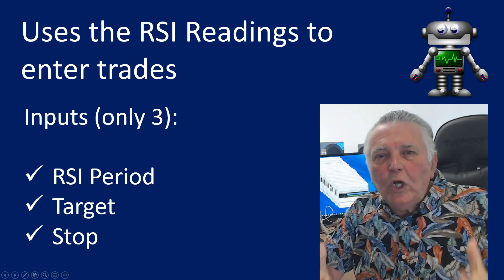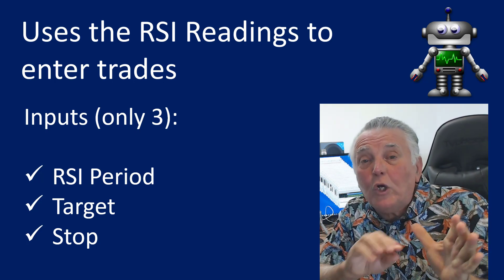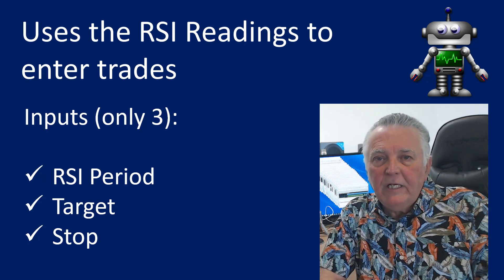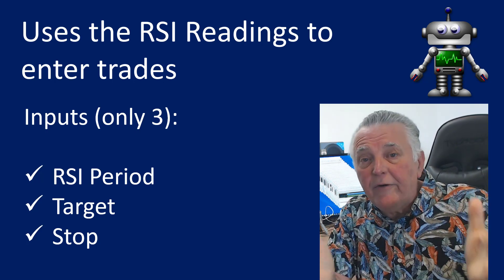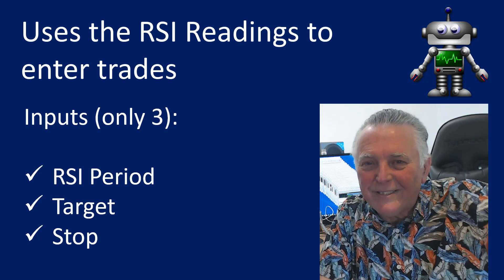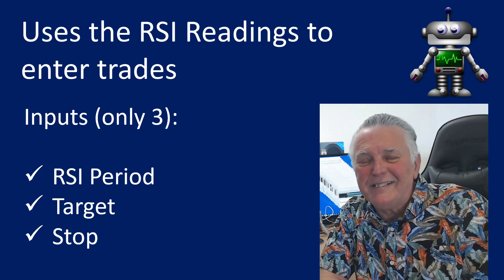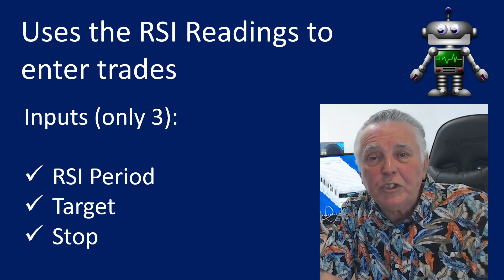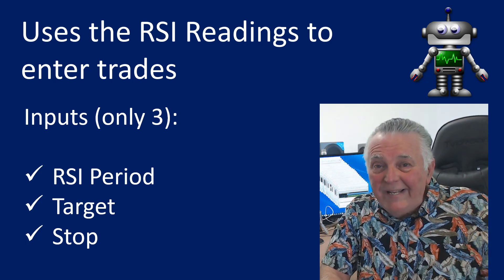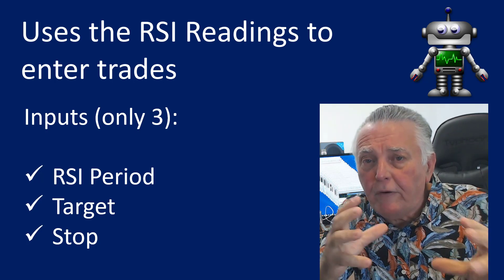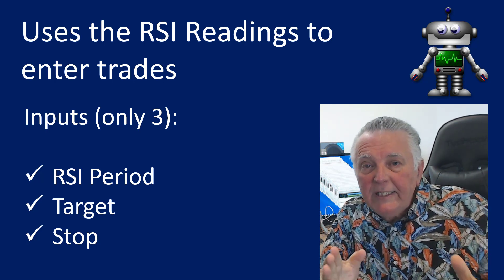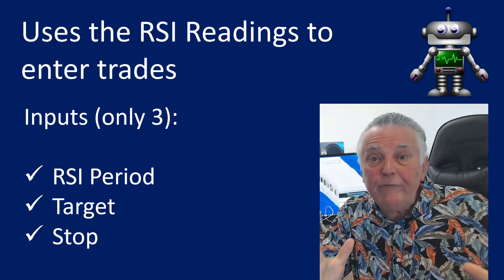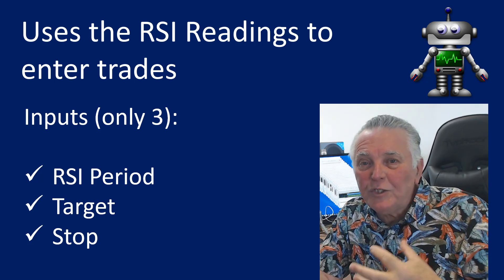It goes off and trades for you. Listen to this carefully — it's a continuous trading robot, so as it closes one deal it immediately opens another. It uses the RSI to determine direction: if RSI is above the 50 line it's in a buy phase, if it's below the 50 line it's in a sell phase. Then it applies the target and stop you've set. If you're clever, you set a stop that is half of your target, because that means you can have one successful deal out of three trades and still break even — giving you a real advantage in the market.